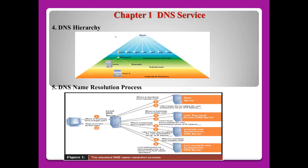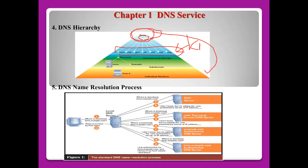Number four: DNS hierarchy. At the top of the hierarchy is the root, normally expressed as a dot. The first level includes keywords like com, edu, gov, mil, net, org, and country codes such as kr, uk, or kh.